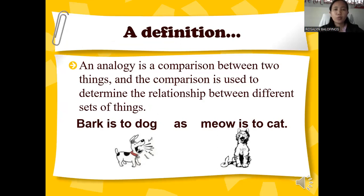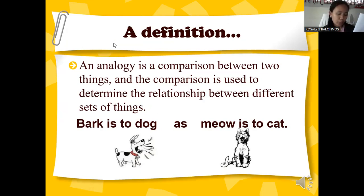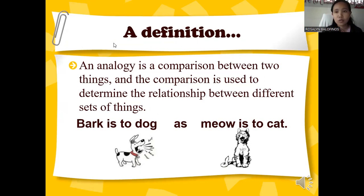When we say analogy, it is the comparison between two things, and the comparison is used to determine the relationship between different sets of things. Looking back at your module, we have there the different types of analogy — we have broken it down into 15 types.